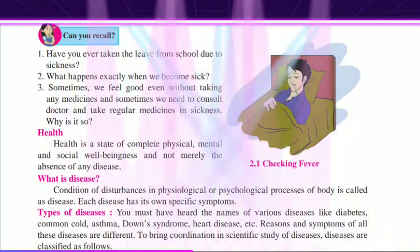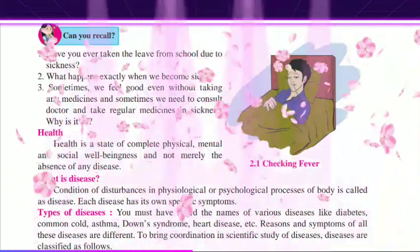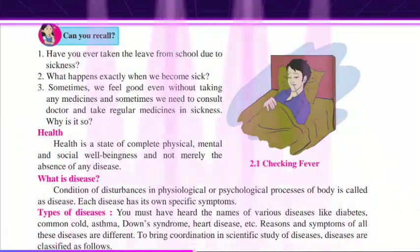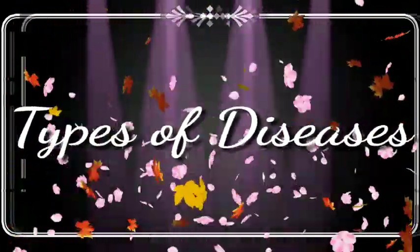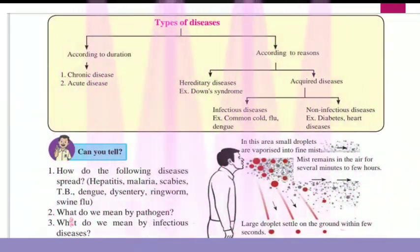Now let us see what are the types of diseases. You must have heard the names of various diseases like diabetes, common cold, asthma, Down syndrome, heart disease, etc. The reasons and symptoms of all these diseases are different. To bring coordination in the scientific study of diseases, diseases are classified according to duration and according to reasons.